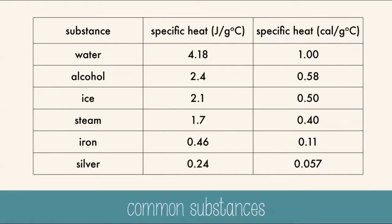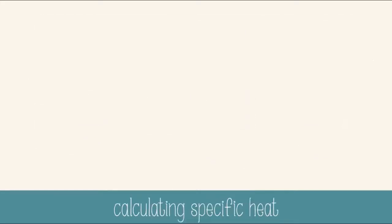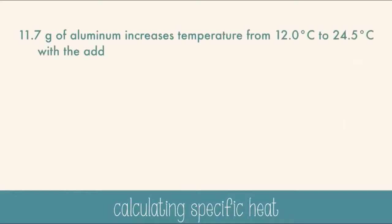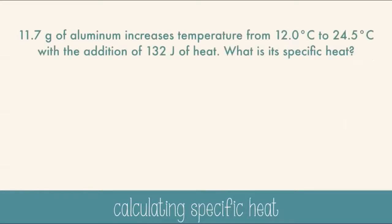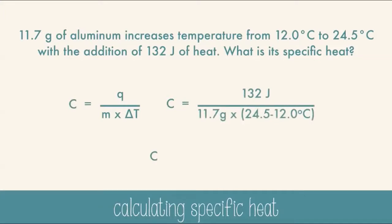Water has a very high specific heat capacity compared to metals like iron, so it requires more heat to raise the temperature of water than iron — like boiling water in an iron pot where the pot gets too hot to touch but the water may only be lukewarm. For example: 11.7 grams of aluminum increases in temperature from 12°C to 24.5°C with 132 joules added. Using C = Q/(m·ΔT), we get C = 0.90 joules per gram·°C for aluminum.